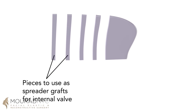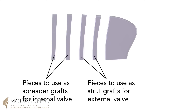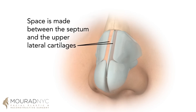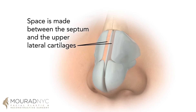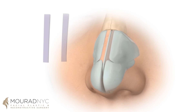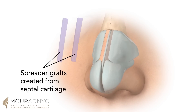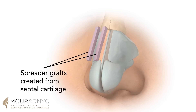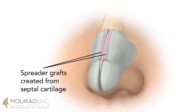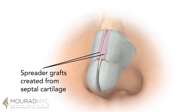The internal nasal valves are strengthened through what are known as spreader grafts. Spreader grafts are placed between the upper lateral cartilages and nasal septum, effectively spreading or widening the nasal valve area, allowing for improved nasal airflow.